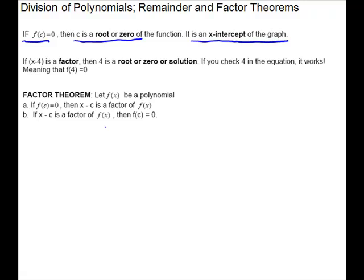It would mean that x minus c is a factor of f of x. So for example, if x minus 4 is a factor, then 4 is a root or a 0 or a solution. All those terms mean the same thing. If you check 4 in the equation, it works, meaning that f of 4 equals 0. On the graph it is an x-intercept.